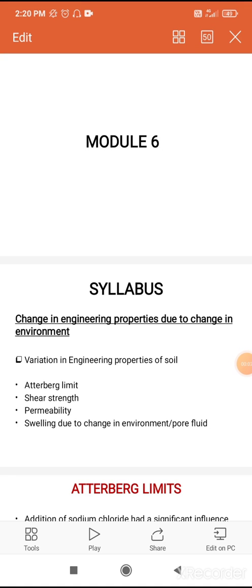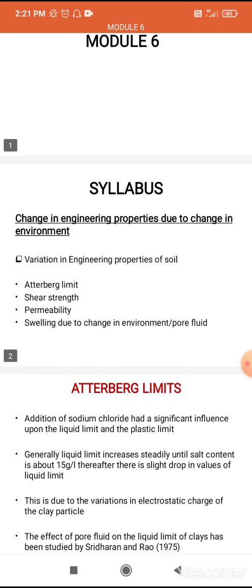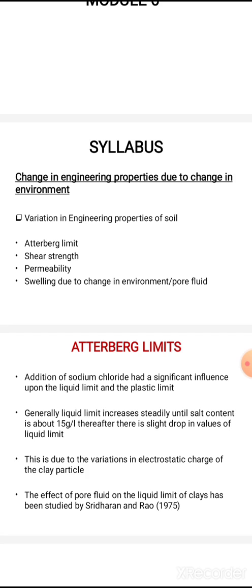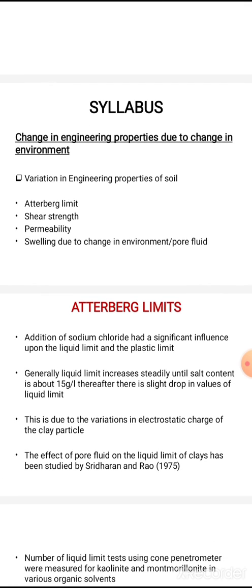Next we are going to study about the sixth module in geo-environmental engineering, that is change in engineering properties due to change in environment. We are discussing about how the change in environment affects the engineering properties. You already know that there are three engineering properties: permeability, shear strength, and compressibility.